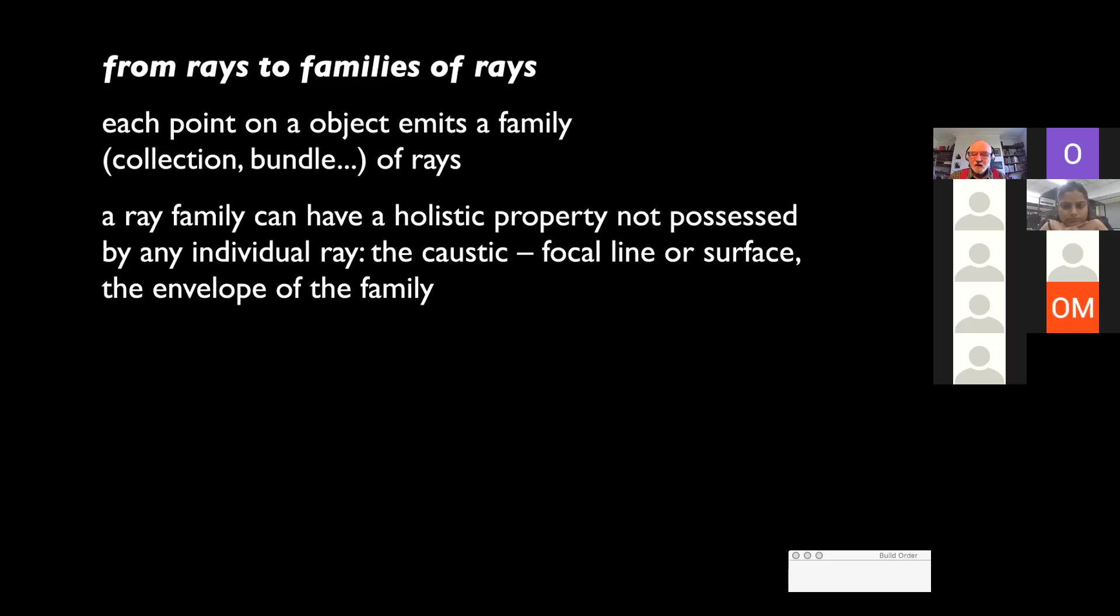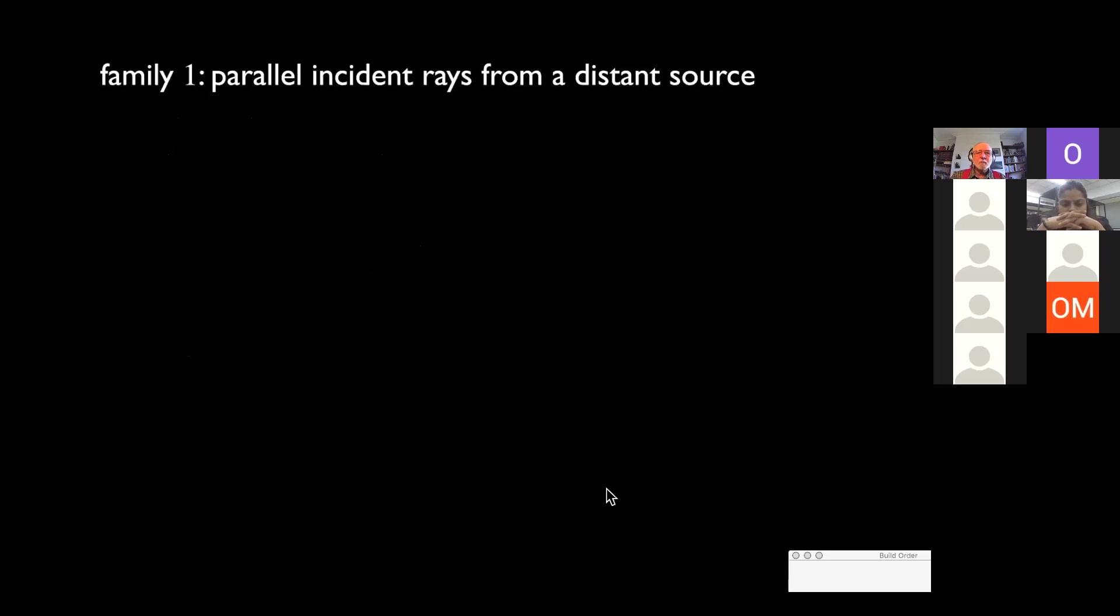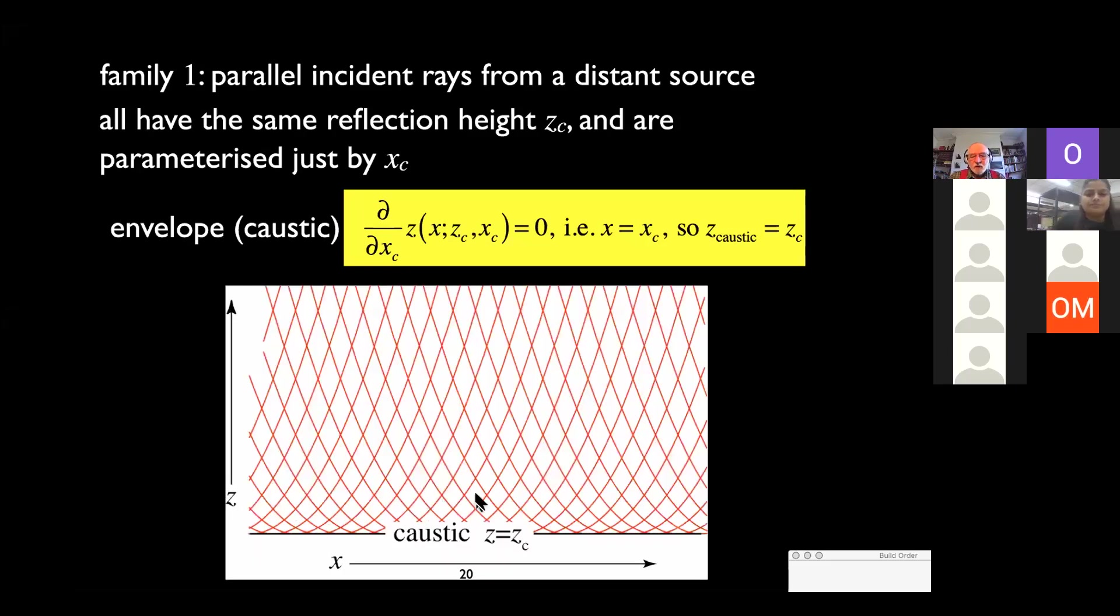Here's one ray, a parabolic ray. It's parameterized by the lateral position and the vertical position where it's horizontal. So these are two parameters. For example, parallel incident rays from a distant source all have the same reflection height, but they're parameterized just by the horizontal motion. And you can calculate the envelope. Here's the pattern. You see here's the envelope, it's horizontal in this particular case.